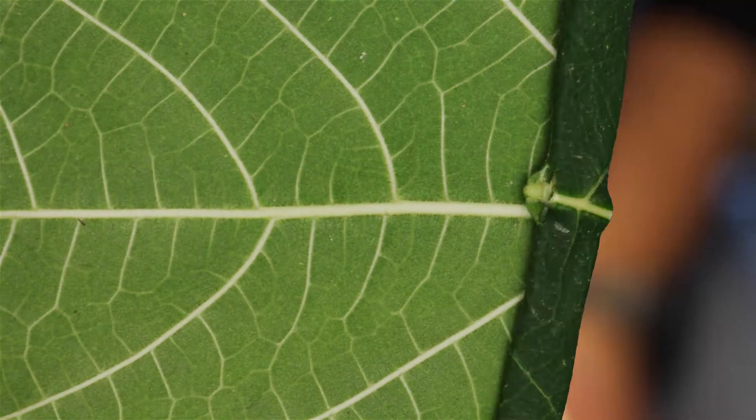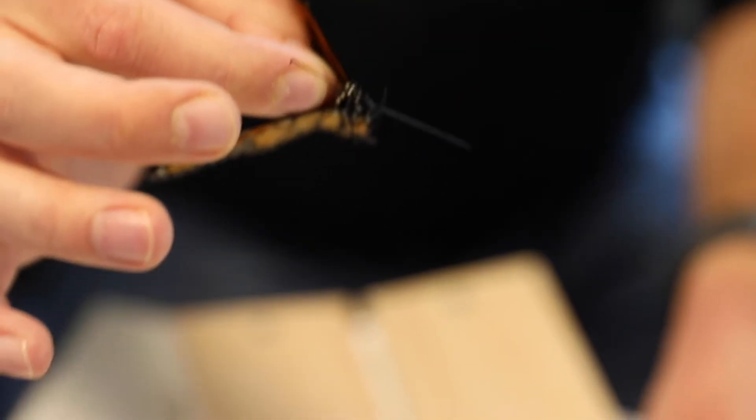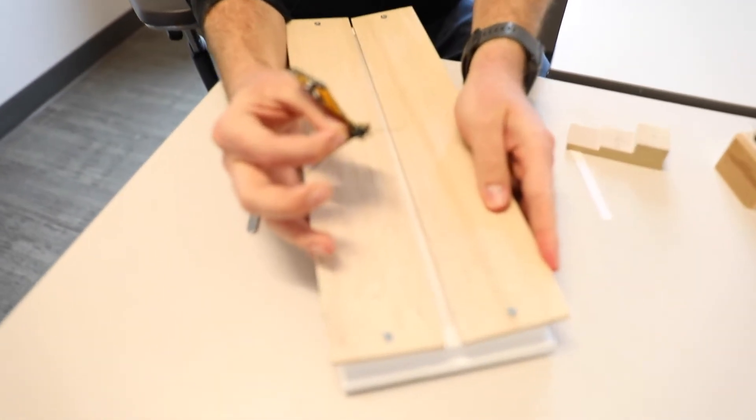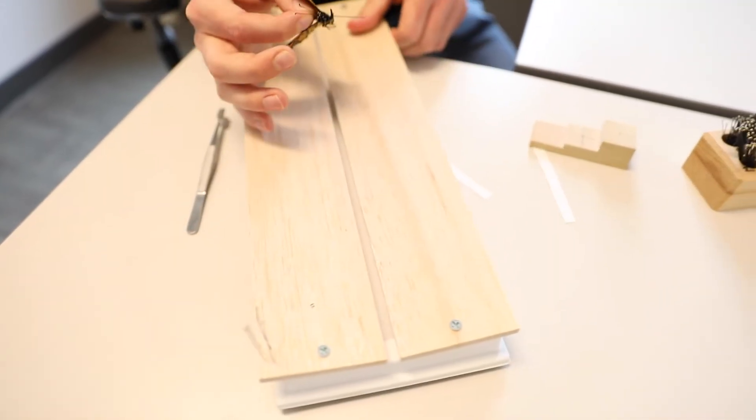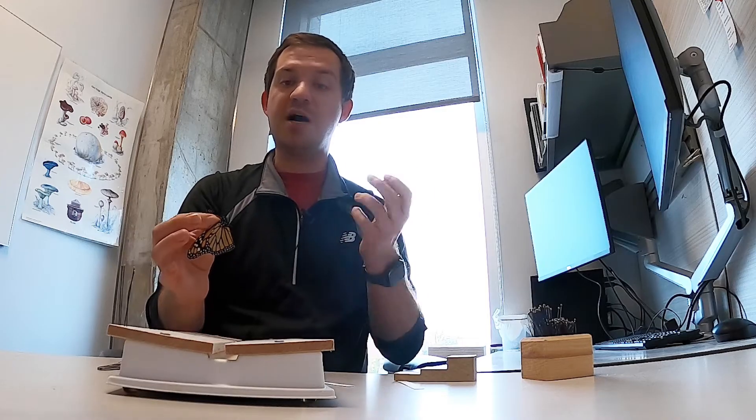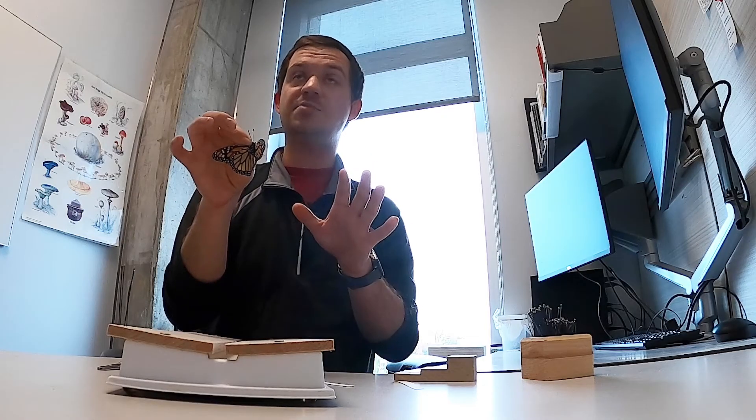In general you want an insect pin to be sticking out of your specimen about a centimeter. For the actual pinning portion, we have this spreading board here that has an adjustable width - these little wood sections can move in and out a little bit. What you want for butterflies and moths is for that section in the middle, which is going to be for the butterfly's body, to just barely fit inside that crevice. You don't want there to be too little space where you're damaging your butterfly by shoving it in, and you don't want that space to be too big.